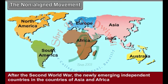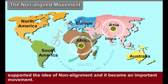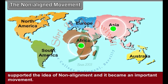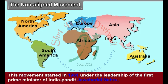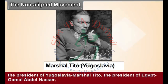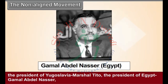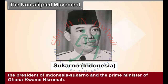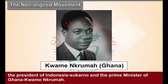After the Second World War, newly emerging independent countries in Asia and Africa supported the idea of non-alignment, and it became an important movement. This movement started in 1961 under the leadership of the first Prime Minister of India, Pandit Jawaharlal Nehru; the President of Yugoslavia, Marshal Tito; the President of Egypt, Gamal Abdel Nasser; the President of Indonesia, Sukarno; and the Prime Minister of Ghana, Kwame Nkrumah.